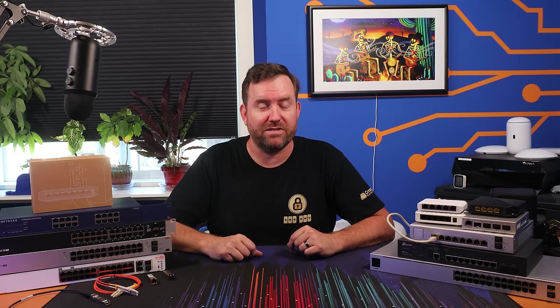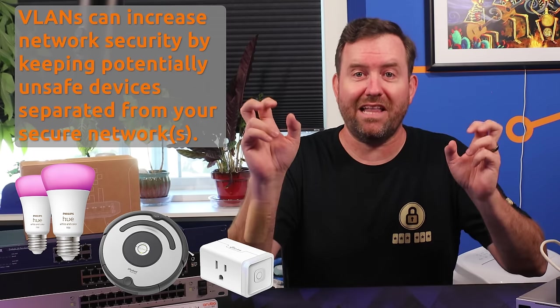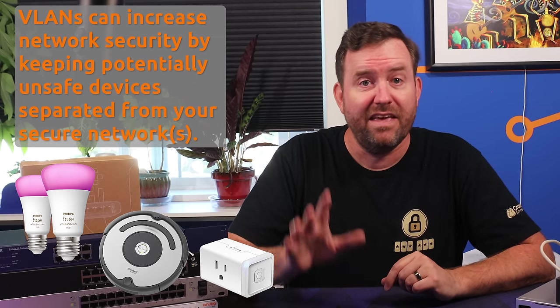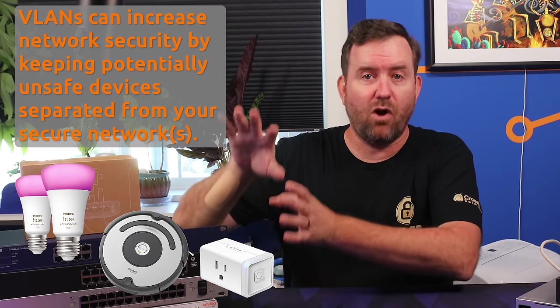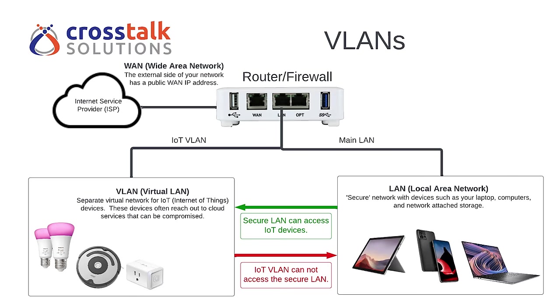VLANs are also good for security purposes. These days we all have a ton of miscellaneous IoT devices such as Rokus, smart vacuums, and smart light bulbs. These devices often maintain connections out to the proverbial cloud, and those cloud services can possibly get compromised by hackers. If we separate out our IoT devices into their own secure VLAN so that we can get to the IoT devices from our main network, and the IoT devices have internet access but don't have access back into that main network, we're adding an extra layer of protection.